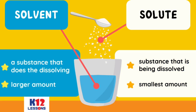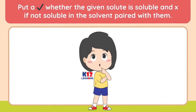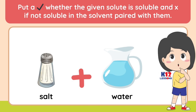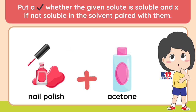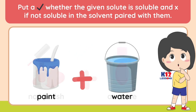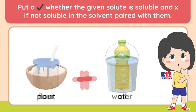After learning about the difference of solutes from solvents, we can now identify the factors affecting solubility. Put a check mark whether the given solute is soluble, or X if it is not soluble in the given solvent. Salt and water. Nail polish and acetone. Paint and water. Flour and oil.